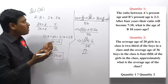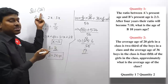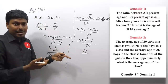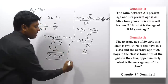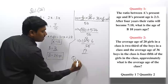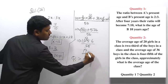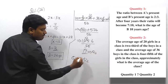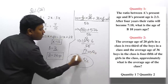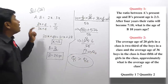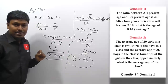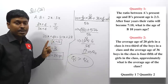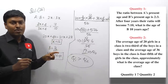Quantity one = 26 and quantity two ≈ 19. Since 26 > 19, quantity one is greater than quantity two.